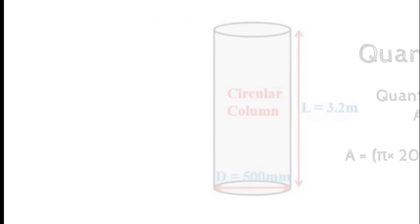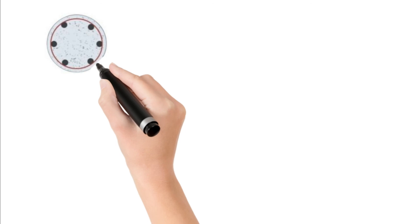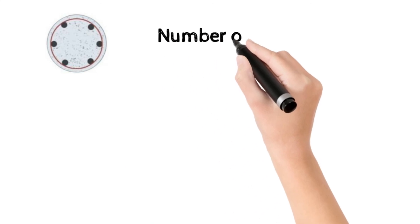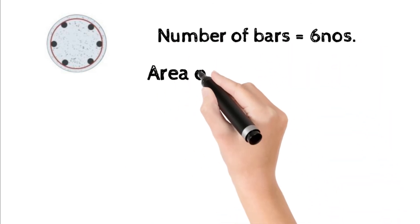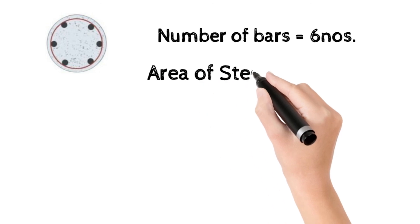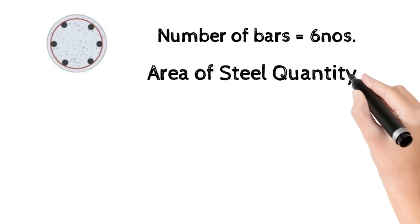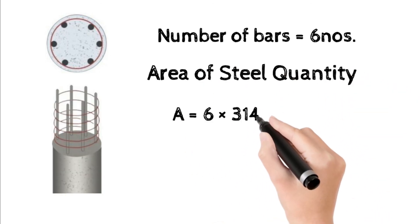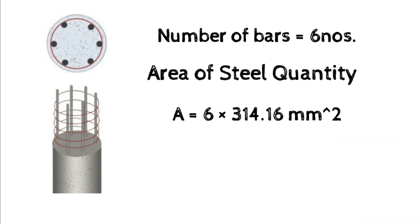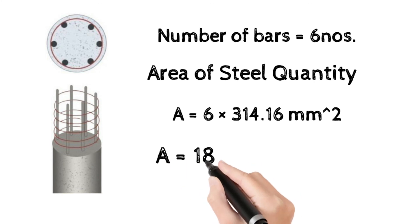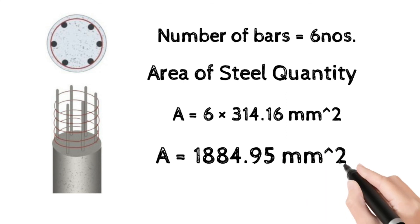Since 6 numbers of 20 mm diameter bars are used, the total area of steel for 6 bars equals 6 multiplied by the area of a single 20 mm diameter bar, that is 314.16 mm². Therefore, the total quantity of steel area is 1884.95 mm².